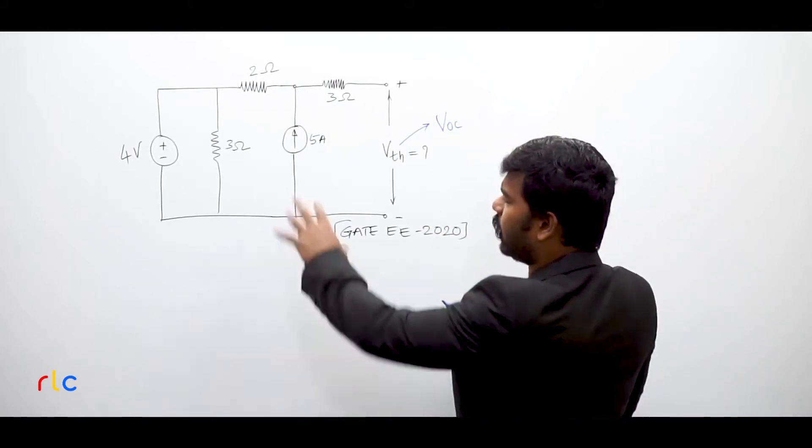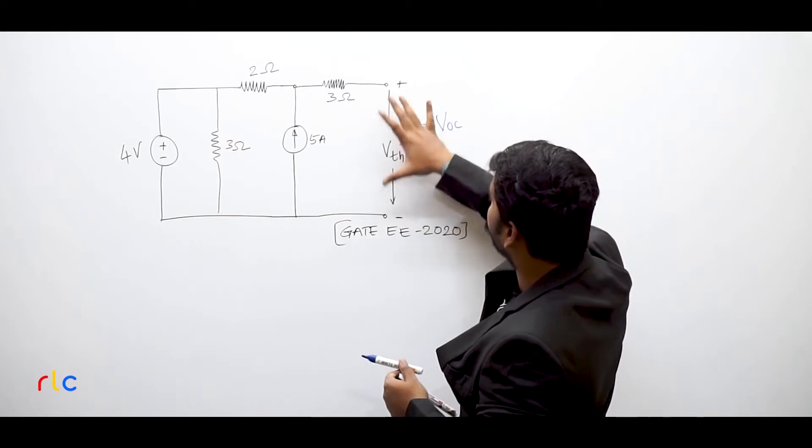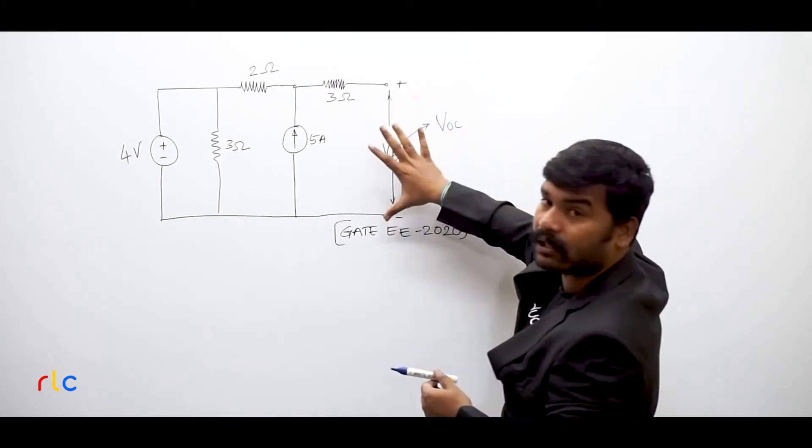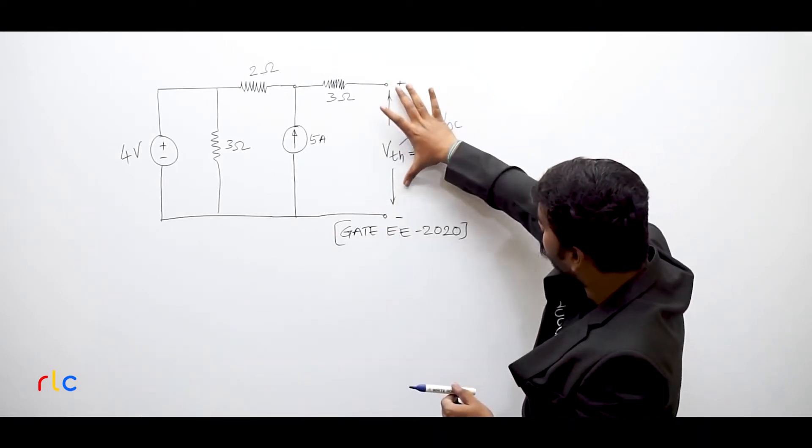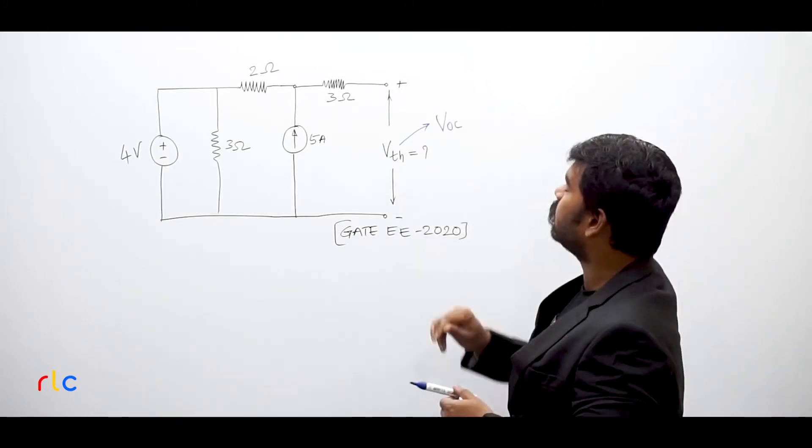Now if you look at this circuit, there are a number of sources. Here there are two open terminals. This is the open circuit terminal. So what is the voltage over here? It itself is the VTH, open circuit voltage. Now you have to find out what is the VTH.